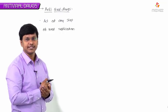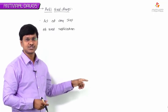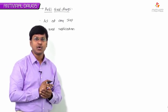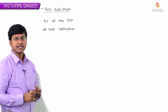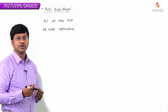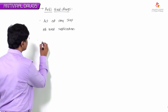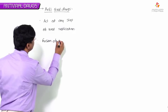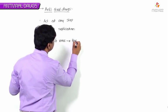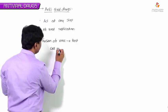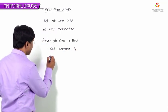Now, looking at this particular viral replication, let me tell you the sequence of events taking place and what group of drugs act at each step. The first step of viral replication involves the fusion of the virus to the host cell membrane and penetration inside the cell.